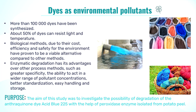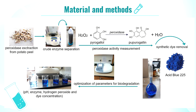The aim of this study was to investigate the possibility of degradation of the anthraquinone dye Acid Blue 225 with the help of peroxidase enzyme isolated from potato peel. Firstly, the enzyme was extracted from potato peel with distilled water, then the activity of the enzyme was determined with pyrogallol as standard substrate. The influences of pH of the reaction mixture, enzyme concentration, hydrogen peroxide and dye concentration were observed, aiming to optimize conditions for dye decolorization treatment. Biodegradation was spectrophotometrically monitored and the initial kinetic parameters were also obtained.